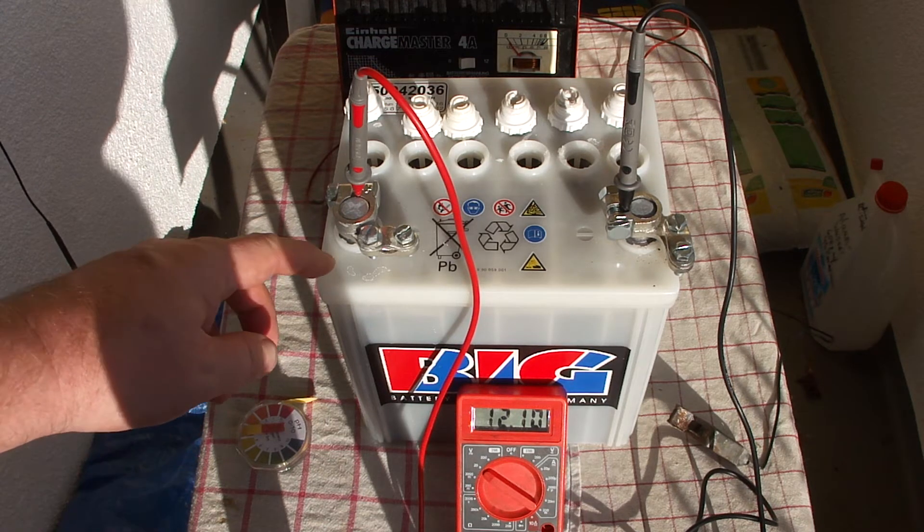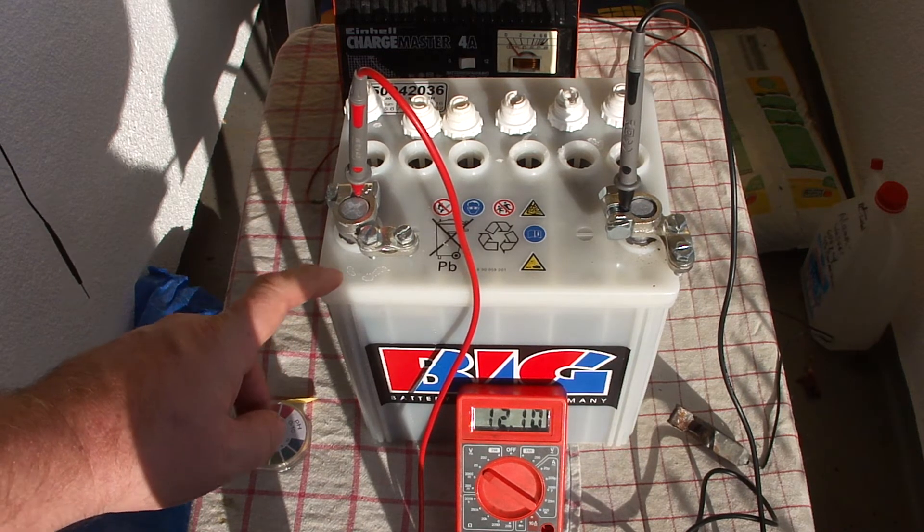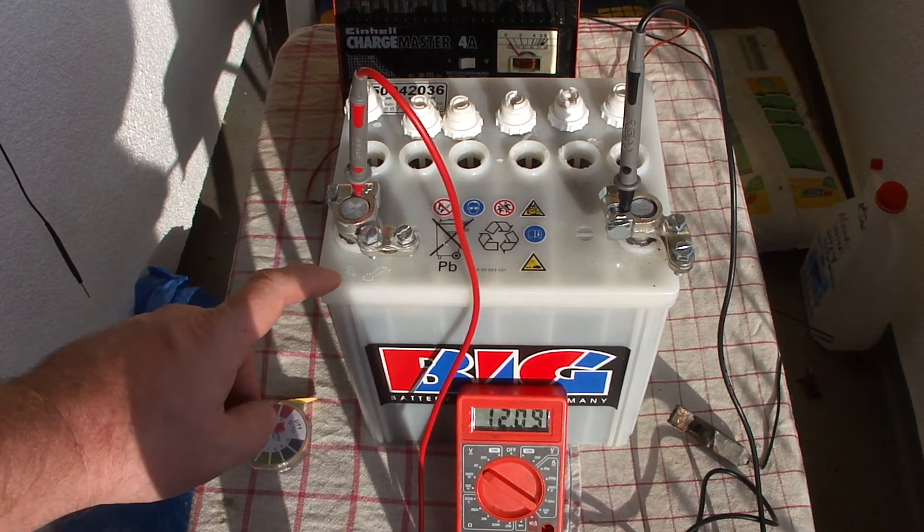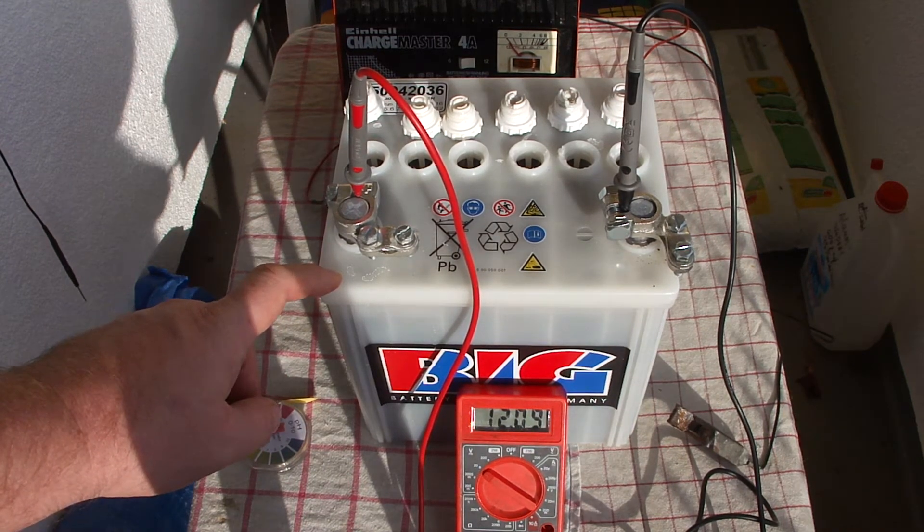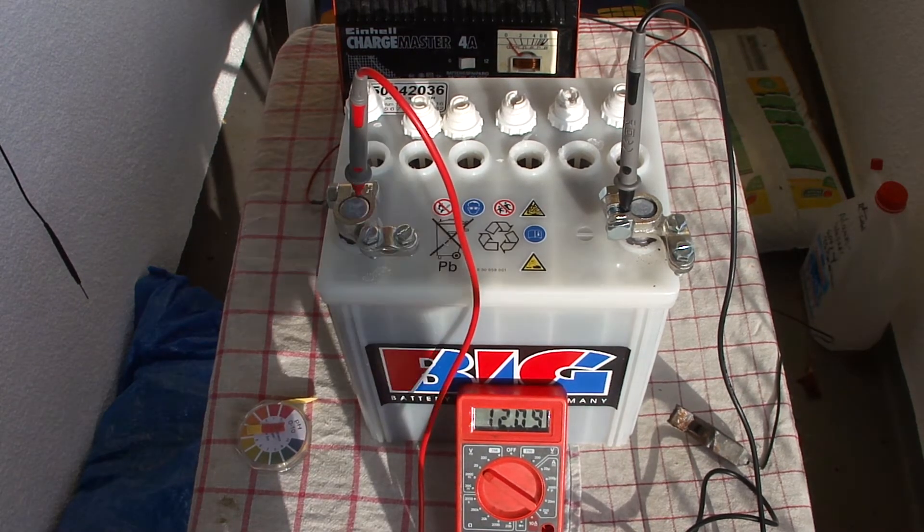I heard that it's better to first cycle these batteries with acid in them, then drain the acid out and fill it up with alum water. Well, I don't know.